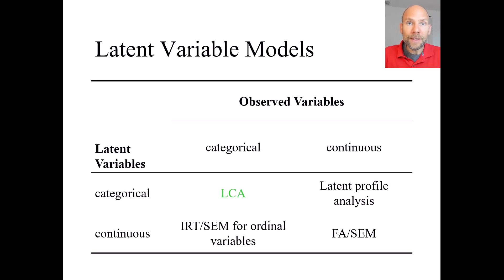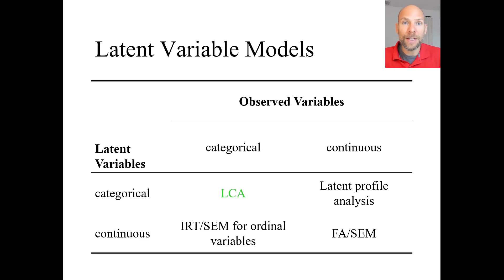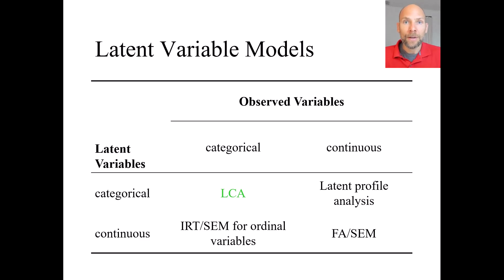We can place latent class analysis in the broader context of latent variable models to see how it compares to other types. What is useful here is to look at the scale levels of the latent and observed variables. When observed variables are categorical and latent variables are also categorical, we have LCA, shown here in green. When indicator variables are continuous and latent variables are categorical, we call this latent profile analysis, which also deals with latent classes.